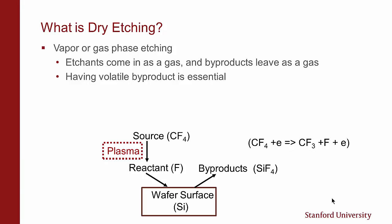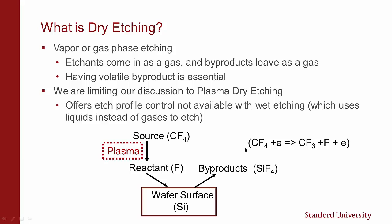Here I show a diagram of the basics of dry etching. We have a wafer, a reactant — in this case fluorine — coming down to the surface, reacting with the surface, and a byproduct, silicon tetrafluoride, coming off. In this lecture I'm going to limit our discussion to plasma dry etching. The plasma offers extra control not available by wet etching where we use liquids. Rather than starting out with fluorine, we start out with CF4, which is a very stable gas, and we use a plasma to break up the gas and generate ions, electrons, and reactive free fluorine that then does the etching.